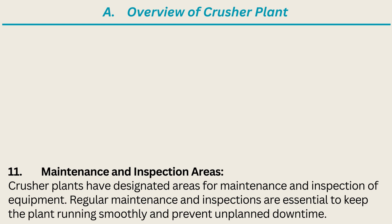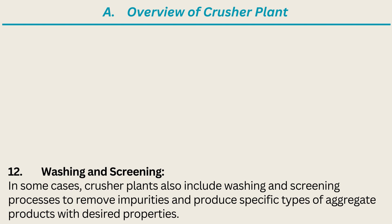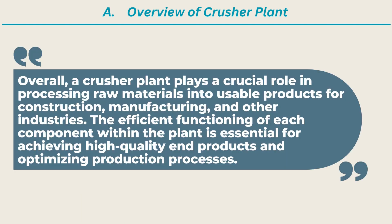11. Maintenance and Inspection Areas. Crusher plants have designated areas for maintenance and inspection of equipment. Regular maintenance and inspections are essential to keep the plant running smoothly and prevent unplanned downtime. 12. Washing and Screening. In some cases, crusher plants also include washing and screening processes to remove impurities and produce specific types of aggregate products with desired properties. Overall, a crusher plant plays a crucial role in processing raw materials into usable products for construction, manufacturing, and other industries.